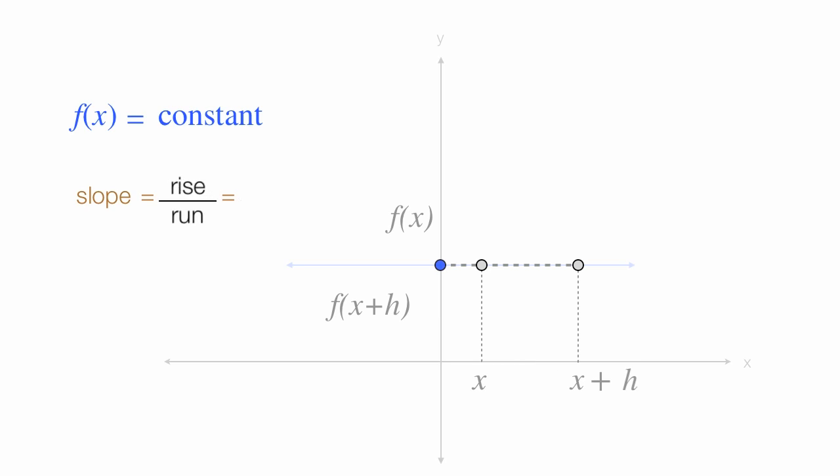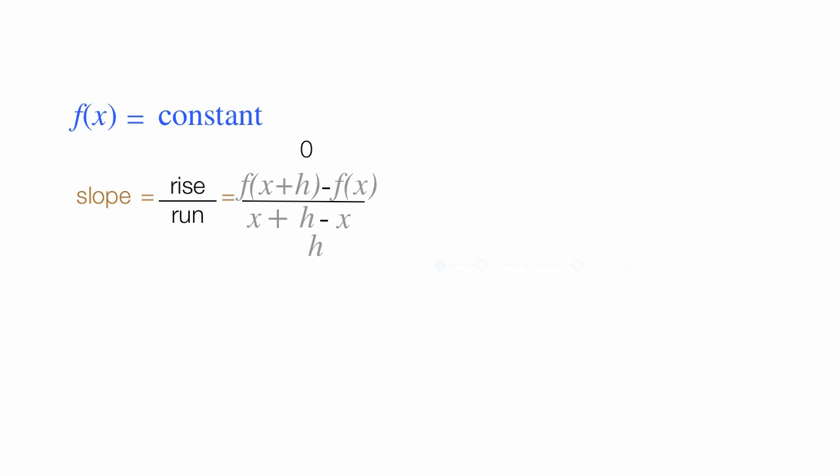So the denominator is x plus h minus x or h. The numerator is f of x plus h minus f of x. And that distance is zero. So this whole thing's equal to zero divided by h, which is equal to zero.